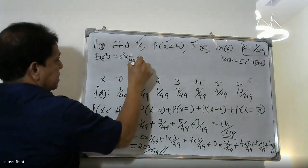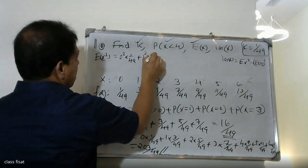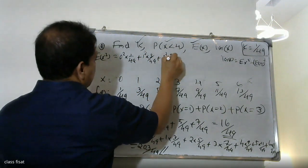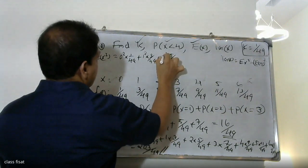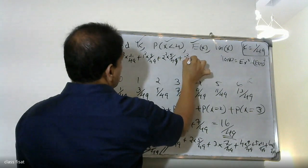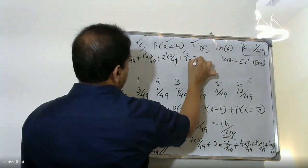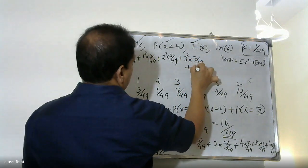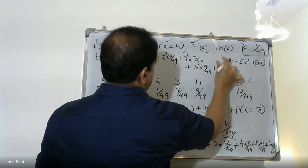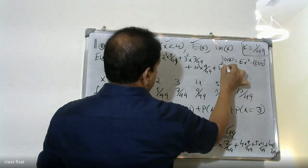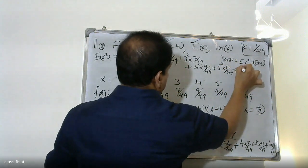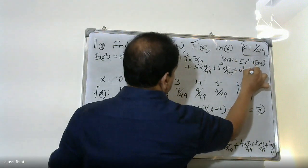For E(X²): 0²×(1/49) plus 1²×(3/49) plus 2²×(5/49) plus 3²×(7/49) plus 4²×(9/49) plus 5²×(11/49) plus 6²×(13/49).